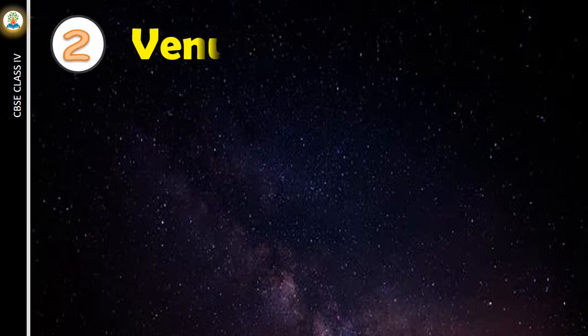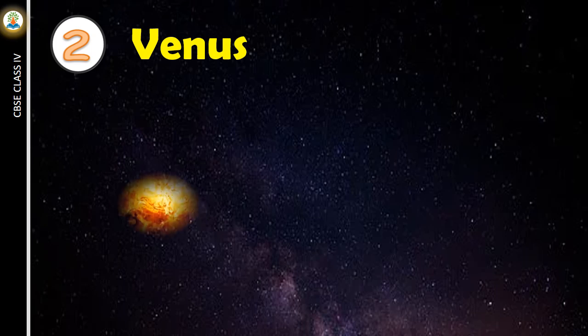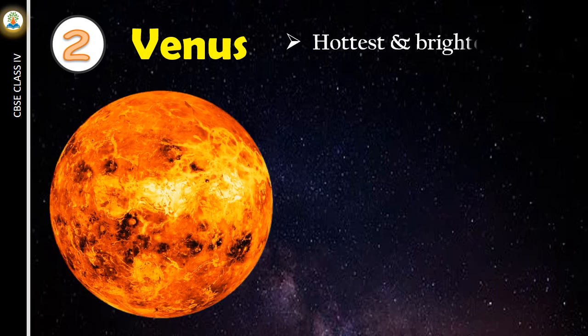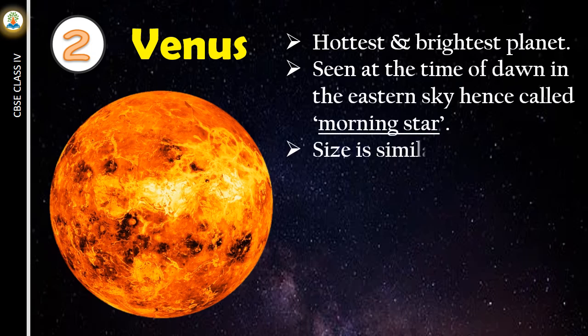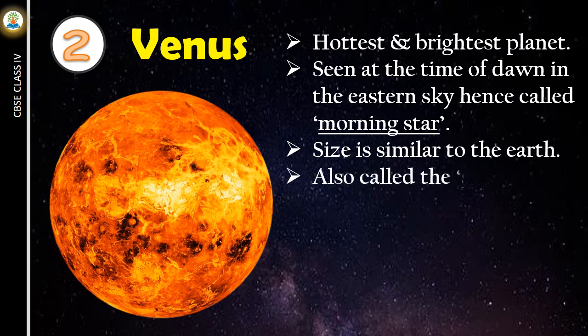Venus is the second planet in the solar system. Venus is the hottest and brightest planet. It is seen at the time of dawn in the eastern sky, hence called morning star. The size is similar to the Earth. It is also called the sister planet of Earth.